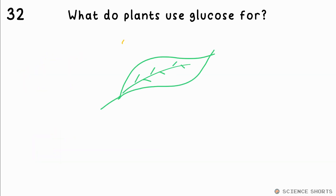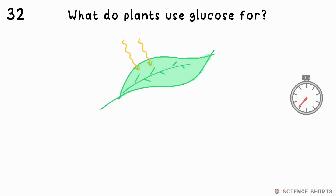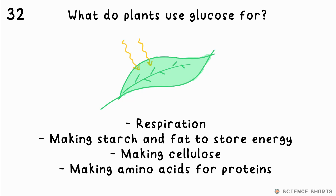Question 32. What is the glucose made from photosynthesis used for? Plants use the glucose they make for respiration. They use it for making starch and fat to store energy, making cellulose, and making amino acids for proteins.